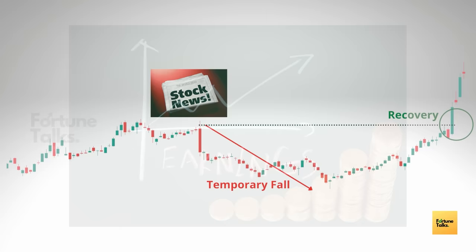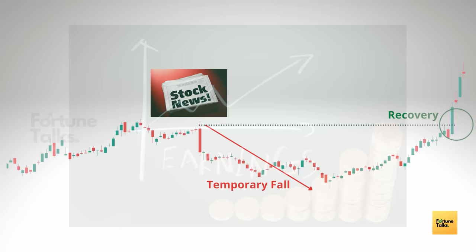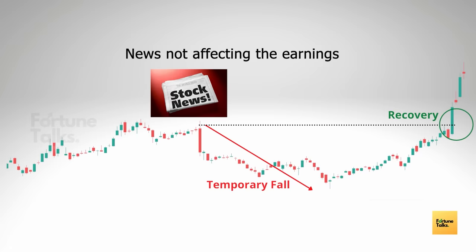Even if very bad news comes out about a stock but has no direct impact on the earnings of the company, there might be temporary noise for a short period but the stock will eventually recover. On the other hand, stocks like Vodafone Idea and Yes Bank are victims of news that directly affects the earnings of the stock, resulting in their crash.